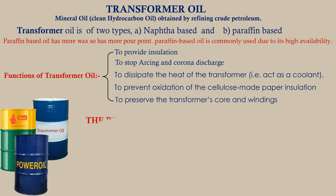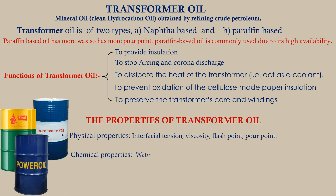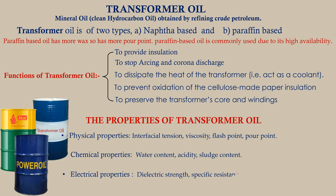The properties of transformer oil are categorized as follows. Physical properties include interfacial tension, viscosity, flash point, and pour point. Chemical properties include water content, acidity, and sludge content. Electrical properties include dielectric strength, specific resistance, and dielectric dissipation factor.